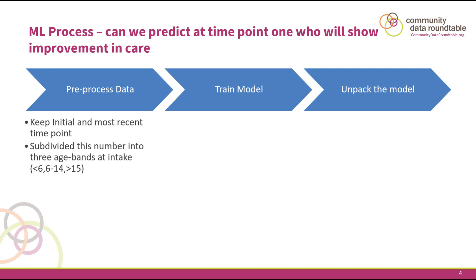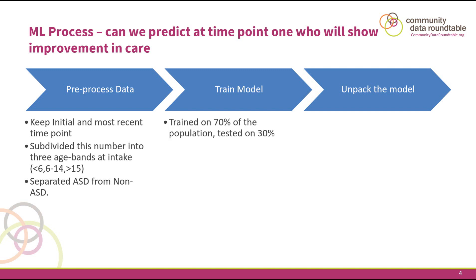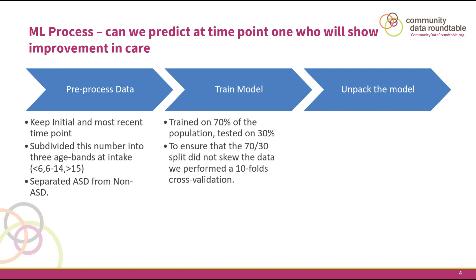We subdivide the data into different age bands and, as mentioned, we separate ASD from non-ASD. Then we train the model: we take 70% of the data and have a machine look at the probability, running different scenarios of first time point CANS to predict the status at a second time point. We also did a tenfold cross-validation to make sure there weren't any biases hidden in our data.